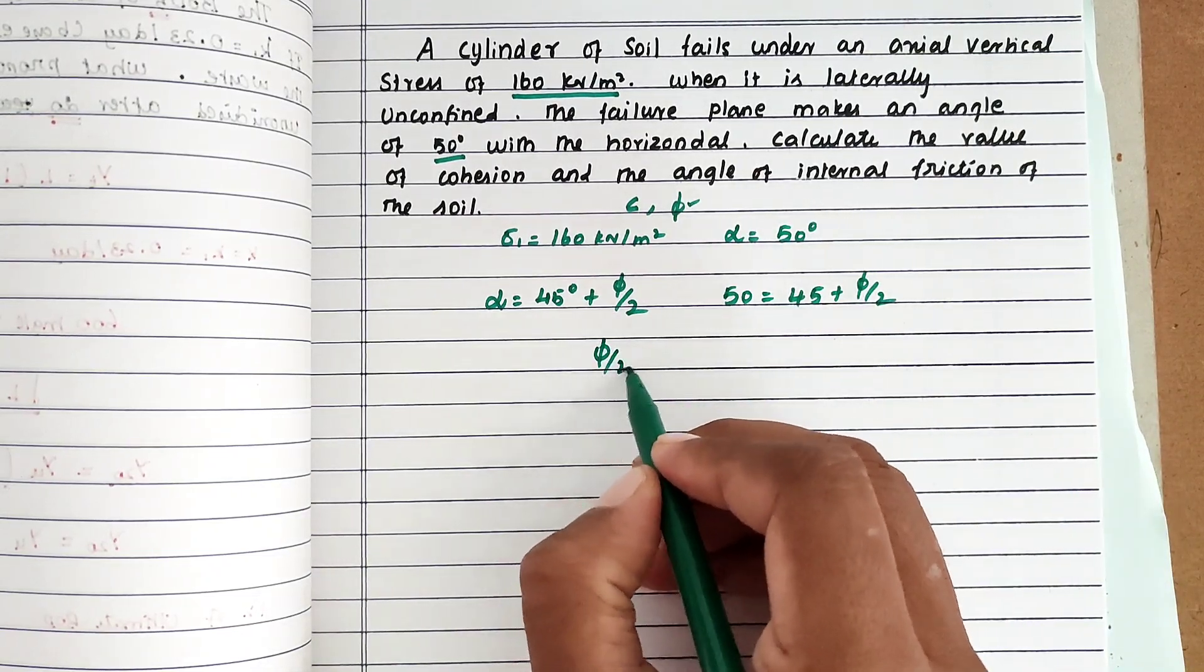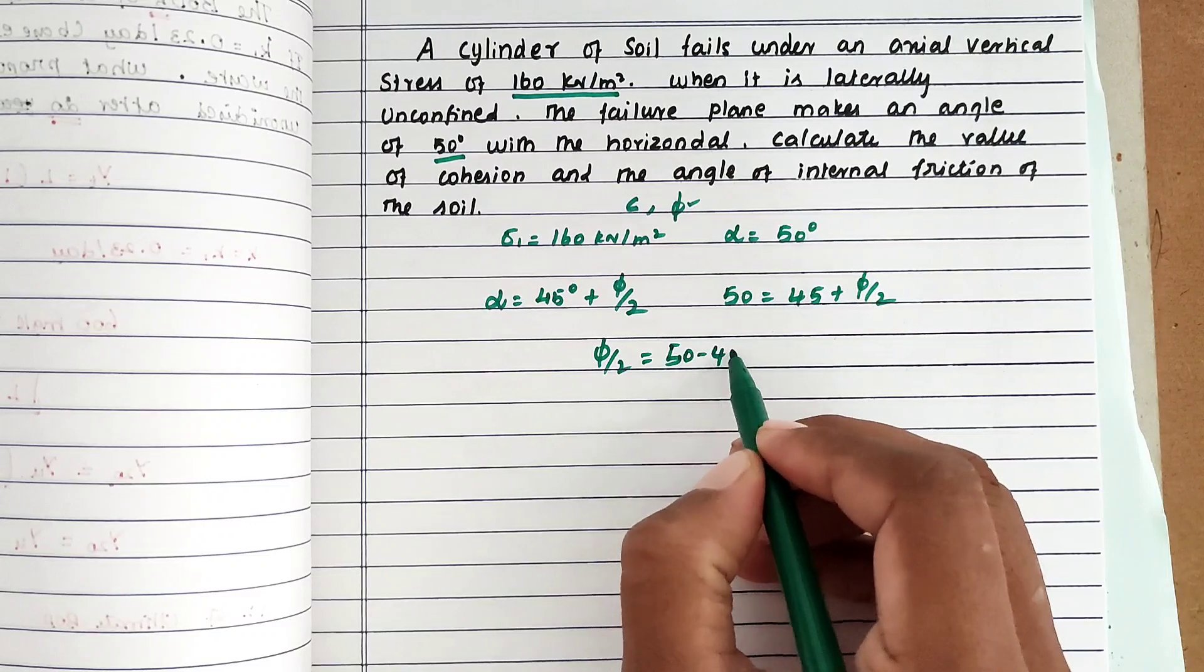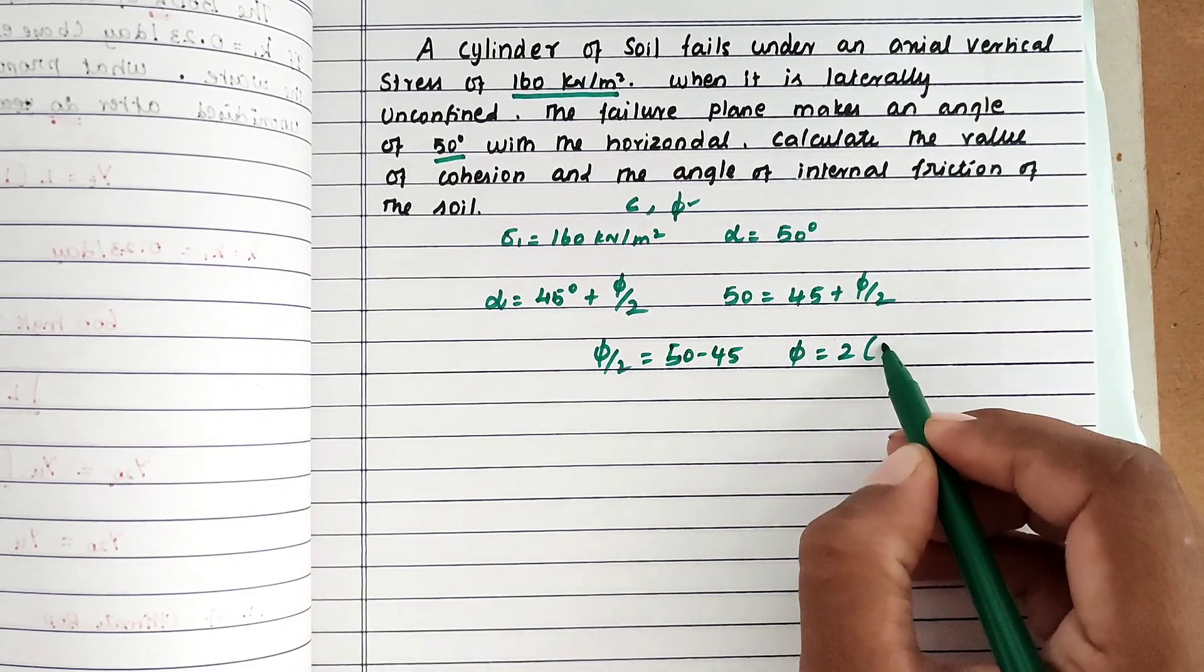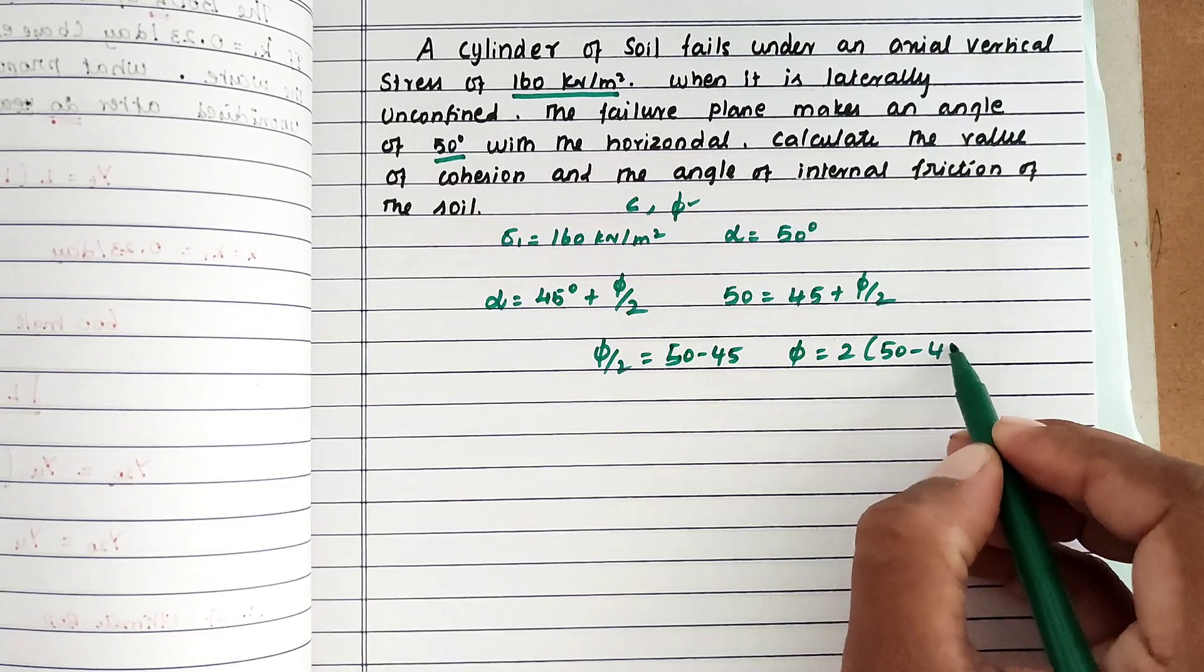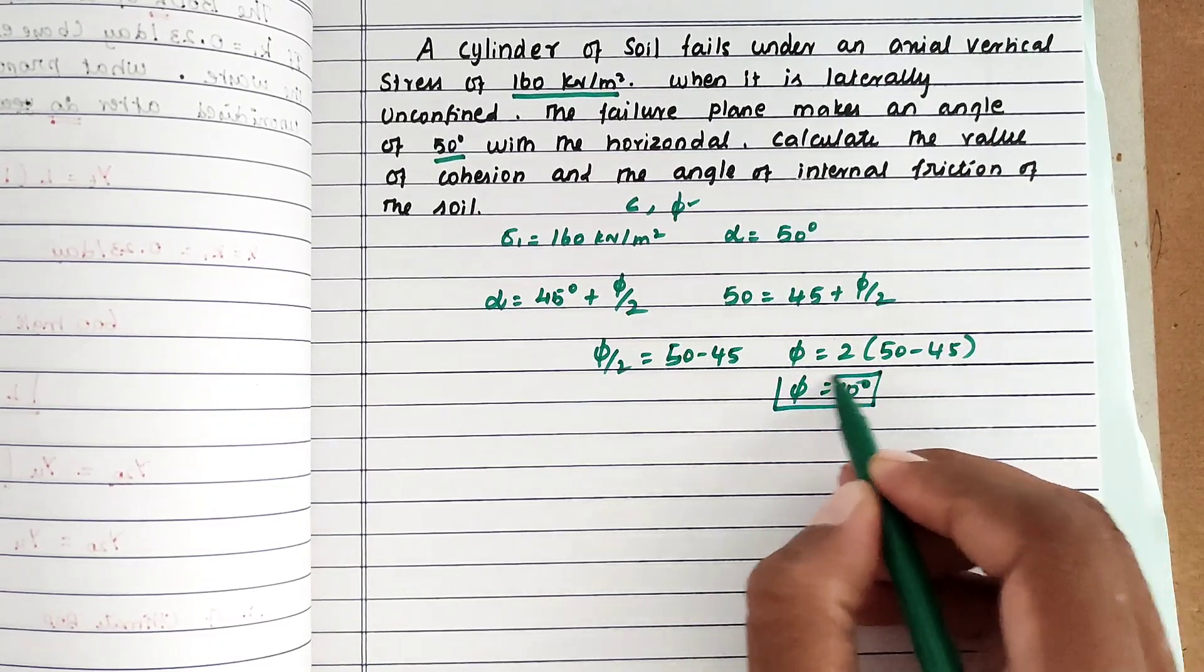So phi by 2 equals 50 minus 45. Then phi equals 2 times (50 minus 45). So phi equals 10 degrees. This is the answer.